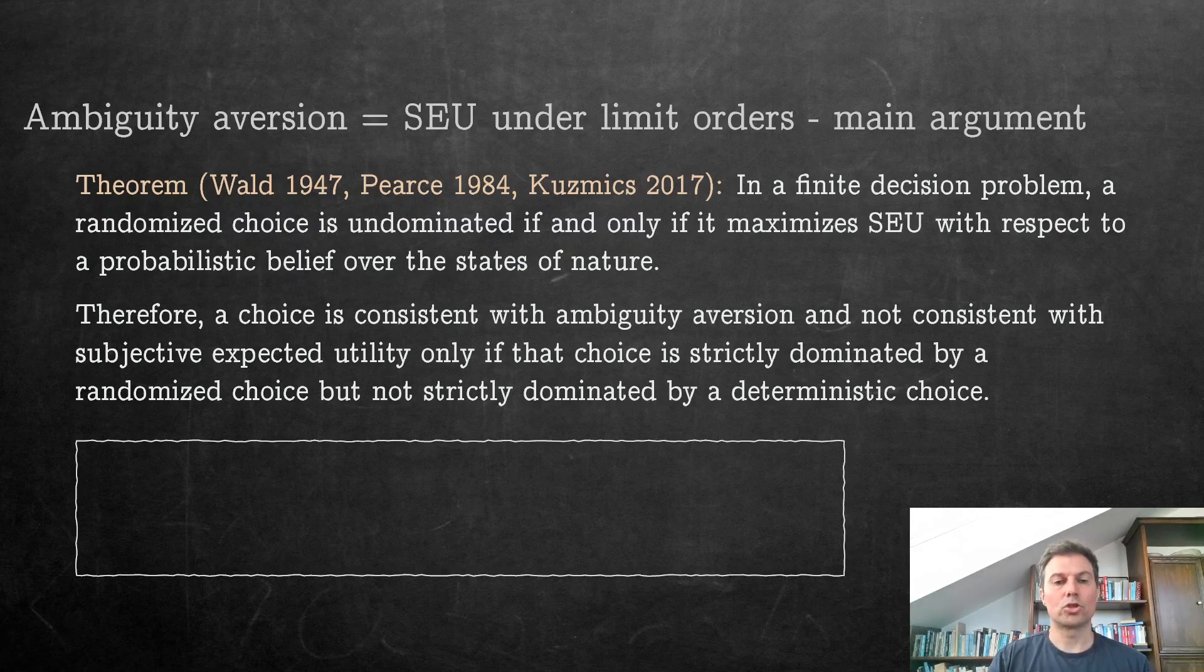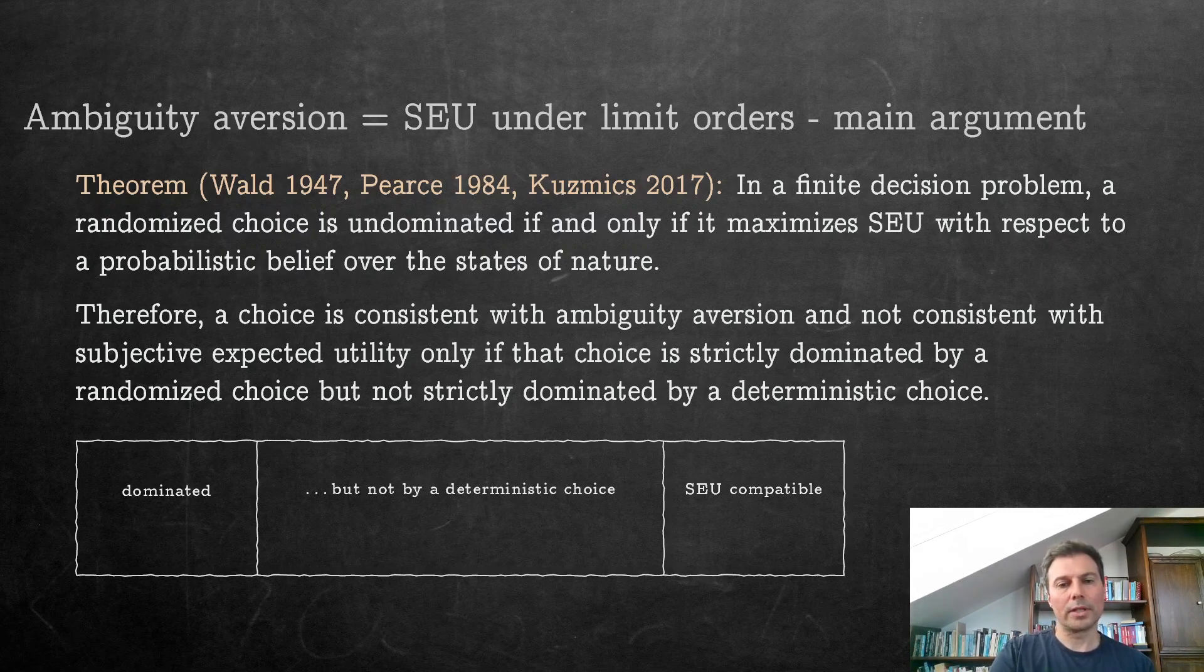Schematically, if that's the set of all choices, you have those that are dominated by a random choice on the left, and these are not possible for a subjective expected utility maximizer. But then if you remove those that are dominated by a deterministic choice, then you get those in the middle here, which gives you basically the range of possible behaviors that can be exhibited by ambiguity-averse decision makers and not at the same time as SEU decision makers.